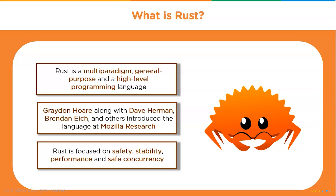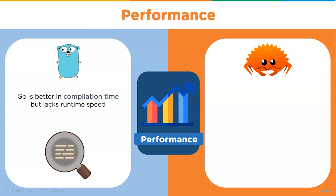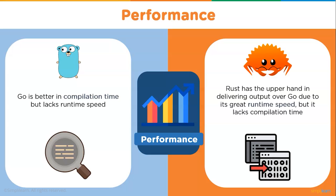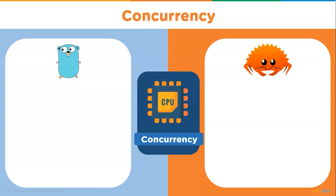Rust is focused on safety, stability, performance, and safe concurrency. Now let's compare them, starting with performance. Go and Rust are both compiled languages that directly translate code to executable machine code and produce efficient code. Many big companies use Rust to boost speed, whereas Go is famous for reducing the number of required servers to almost a tenth of the original capacity. Rust has the upper hand in runtime speed, but lacks in compilation time, while Go is better at compilation time but lacks at runtime speed.